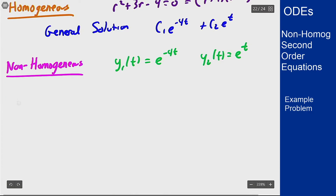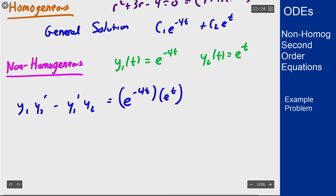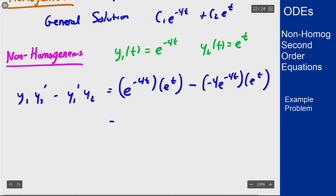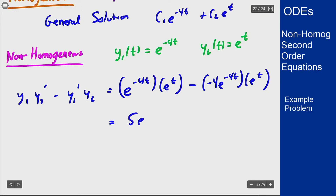We need y1 times y2 prime minus y1 prime times y2. This gives us e to the minus 4t times e to the t, minus negative 4e to the minus 4t times e to the t, which is e to the minus 3t plus 4e to the minus 3t, giving us 5e to the minus 3t. We'll call this W of t because it is the Wronskian of these two functions.